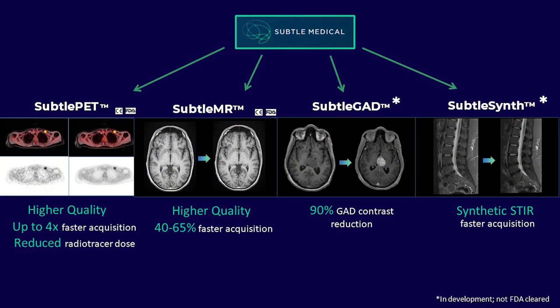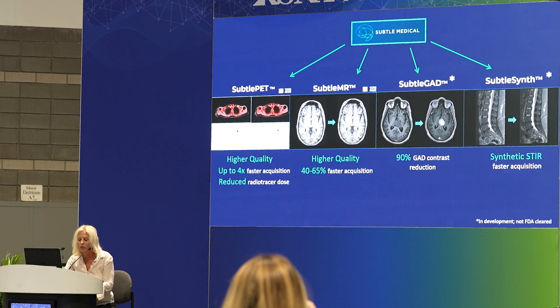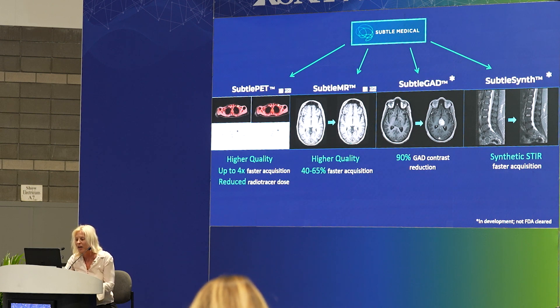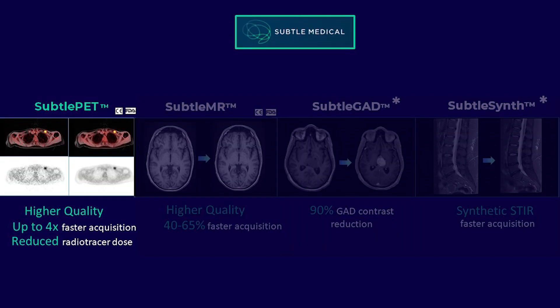Subtle Medical has some very exciting AI tools — we'll take a look at four of them. Subtle PET provides higher image quality and allows up to four times faster acquisition and reduced radiotracer dose. Subtle MR again offers higher image quality but allows 40 to 65 percent faster acquisition. Subtle GAD provides a 90 percent reduction in the gadolinium contrast needed. And then also synthetic STIR. Both Subtle GAD and Subtle Synth are in development right now, not yet FDA approved, but we can get basically 100 percent acceleration because it's synthesizing the STIR sequence.